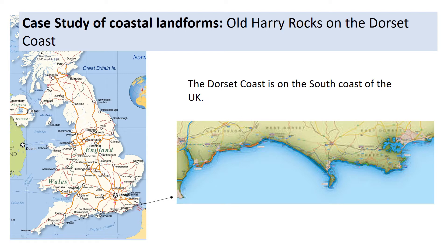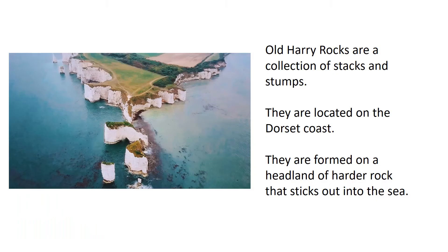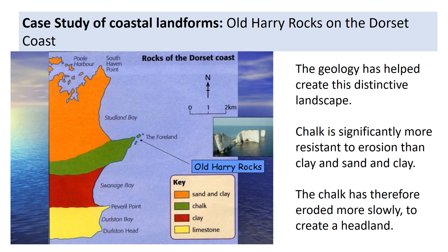Our case study of coastal landforms is Old Harry Rocks on the Dorset coast. The Dorset coast is on the south-western coast of the UK. Old Harry Rocks are a collection of stacks and stumps, formed on a headland of harder rock that sticks out into the sea. Just like Overstrand, it's the geology that's helped create this distinctive landscape.